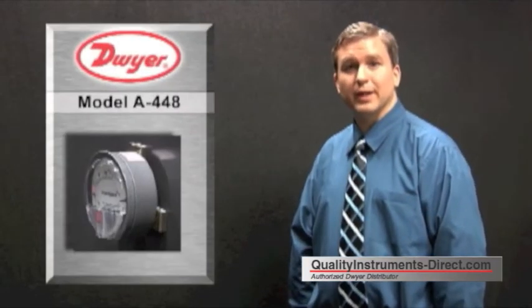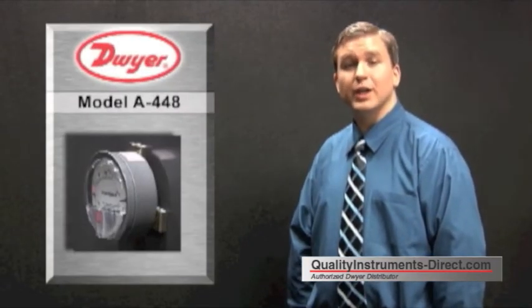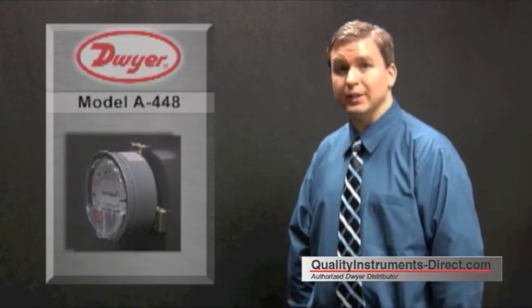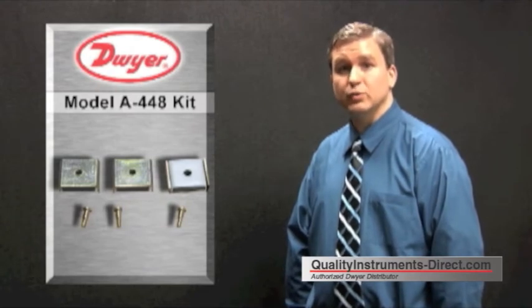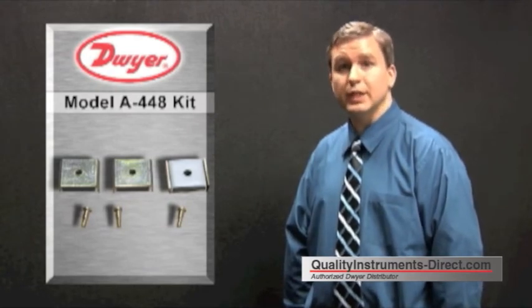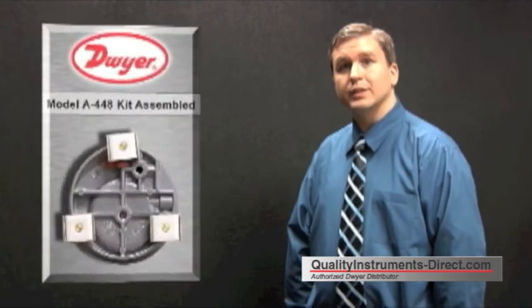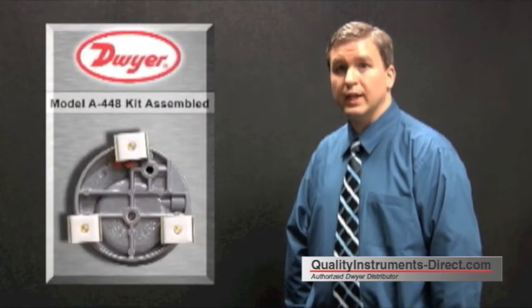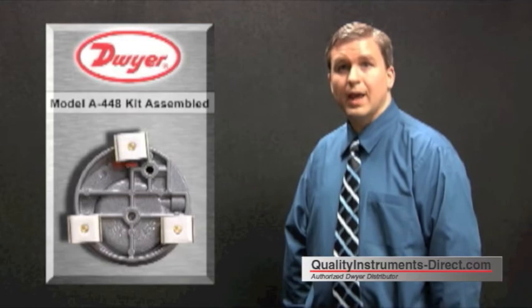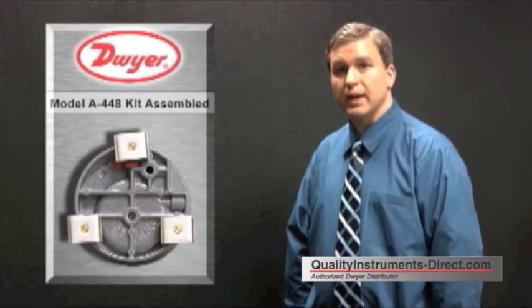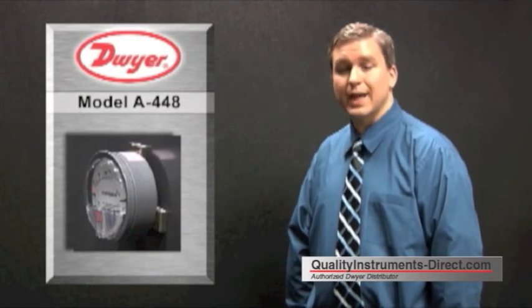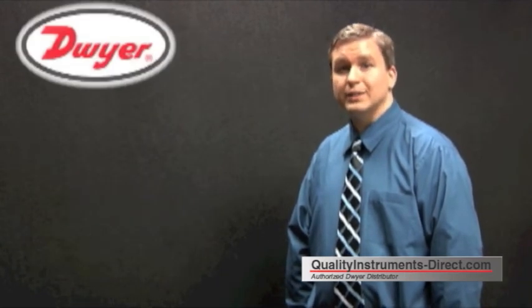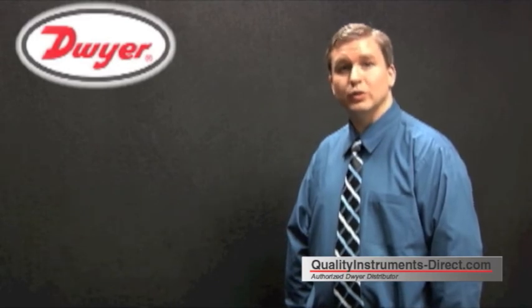Another means to mount the Magna Helic Differential Pressure Gauge is with our A-448 magnetic mounting kit. These magnets allow the gauge to be mounted to any metal surface with magnetic properties such as a standard air duct. Simply take the threaded screws provided with the A-448 kit and insert it through the back of the magnets into the back of the gauge. Once complete, it easily adheres to any metal surface. That makes it ideal for portable applications where it is required to move the gauge frequently during tests.